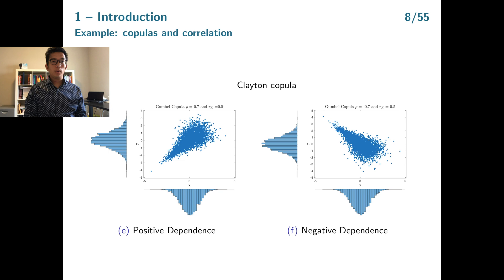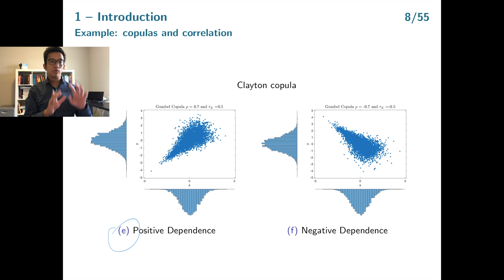Here is a third situation with yet another dependence structure. Comparing situations A, C, and this new situation E, the marginal information is more or less the same across all three, and the correlation coefficients rho and RK give the same numbers — but the dependence structure in the three cases is very different. Therefore, we need copula functions to model these three different situations, and that is what we will try to do in this chapter.